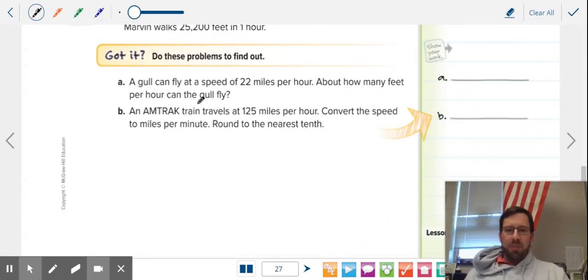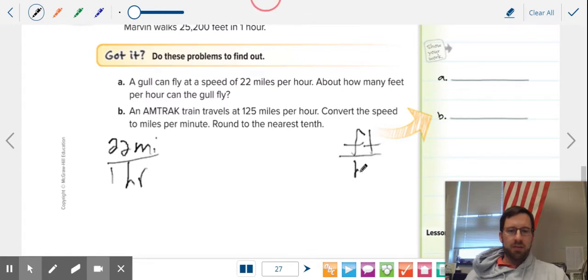So we have a goal, which is a type of bird, can fly at a speed of 22 miles per hour. So we're going to take our rate and write it as a fraction: 22 miles per one hour. How many feet per hour can the goal fly? So I always write the unit I want second. So I look and I see I need to go miles to feet and hours does not need to change. It's already in the right unit.